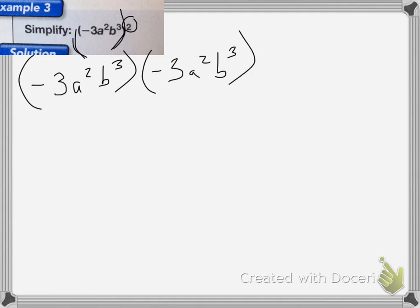I would then combine like terms. So I'd have negative 3 times negative 3a squared times a squared and then times b cubed times b cubed.